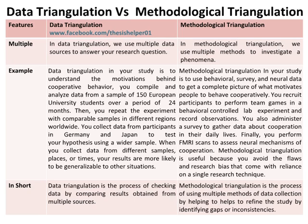In short, data triangulation is the process of checking data by comparing results obtained from multiple sources, whereas methodological triangulation is the process of using multiple methods of data collection, helping to refine the study by identifying gaps or inconsistencies.